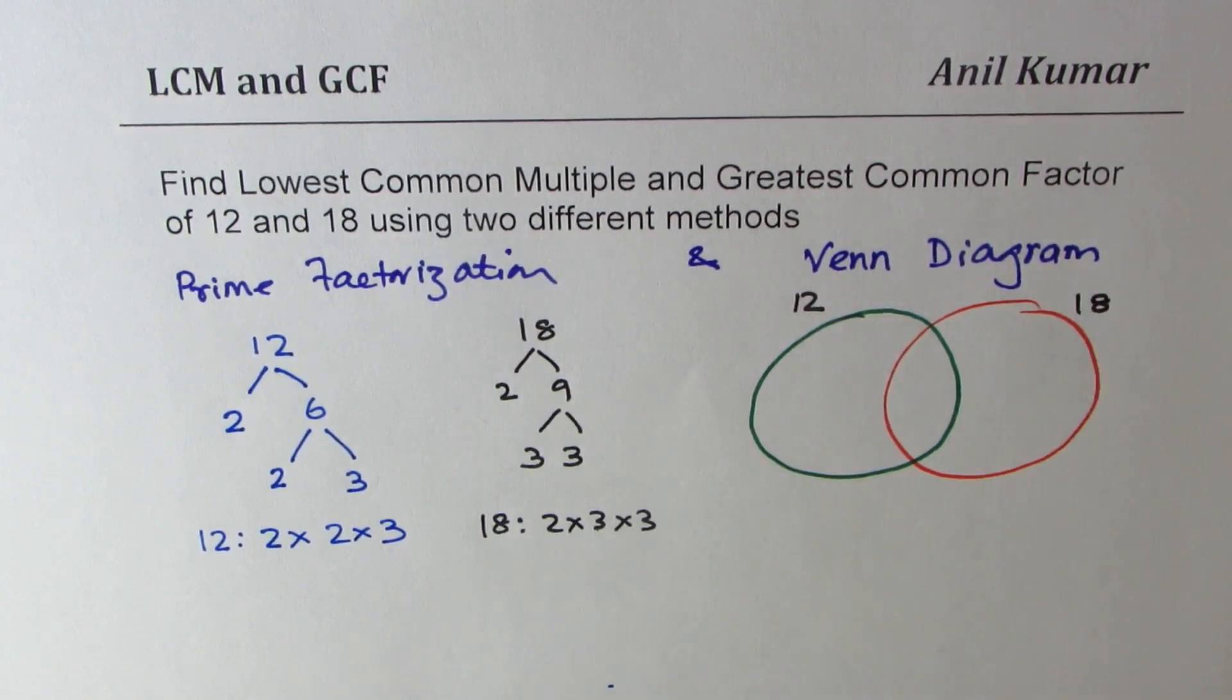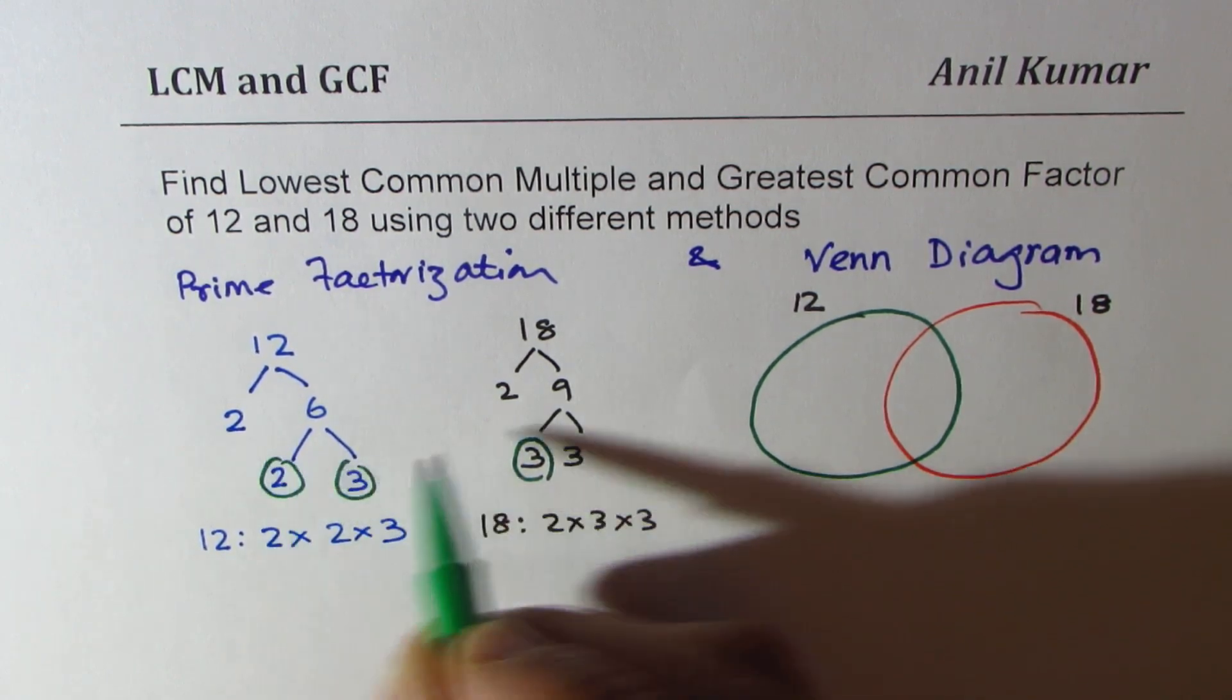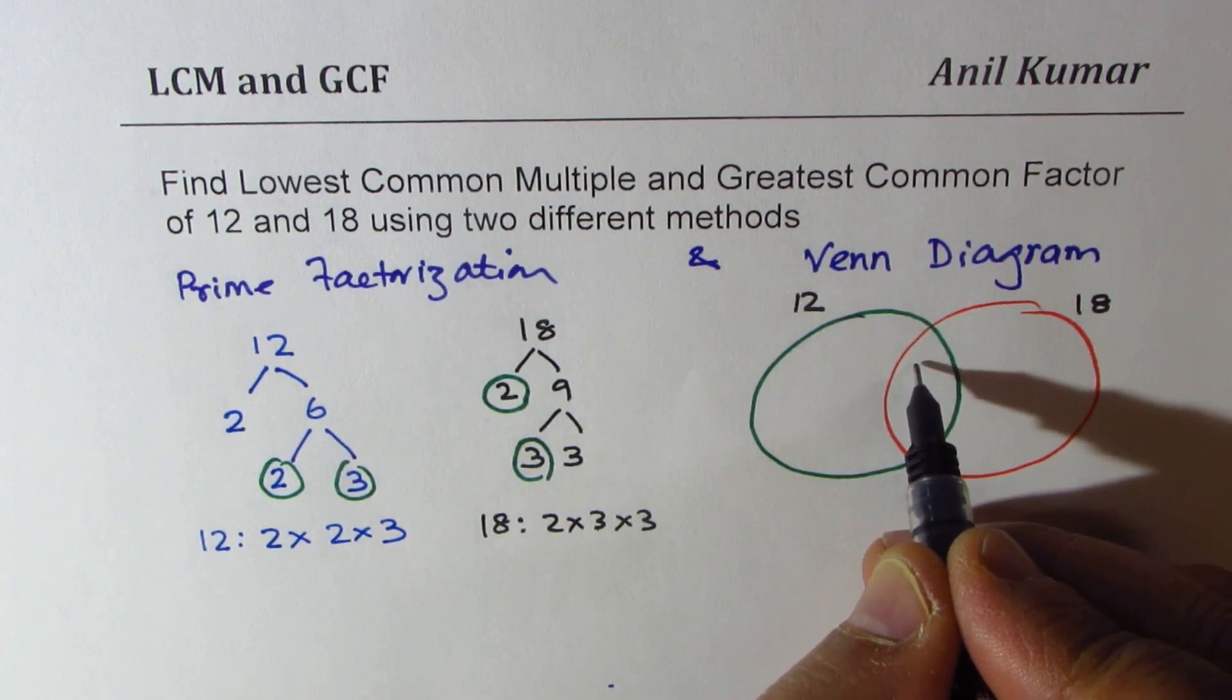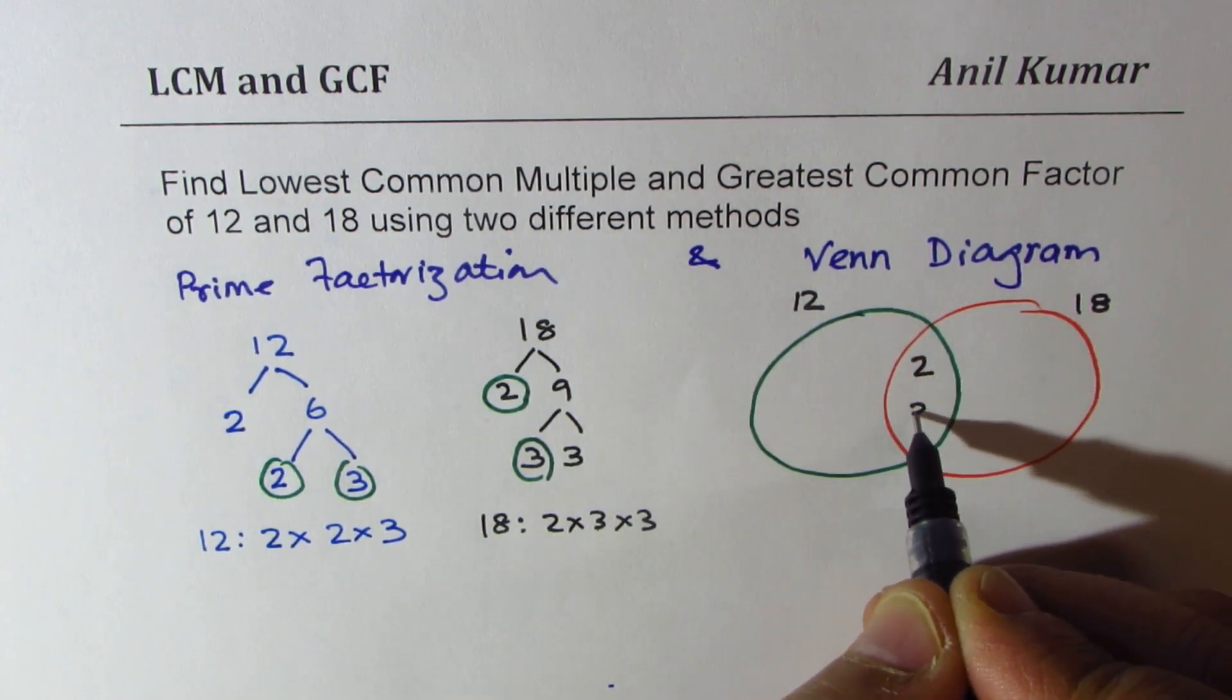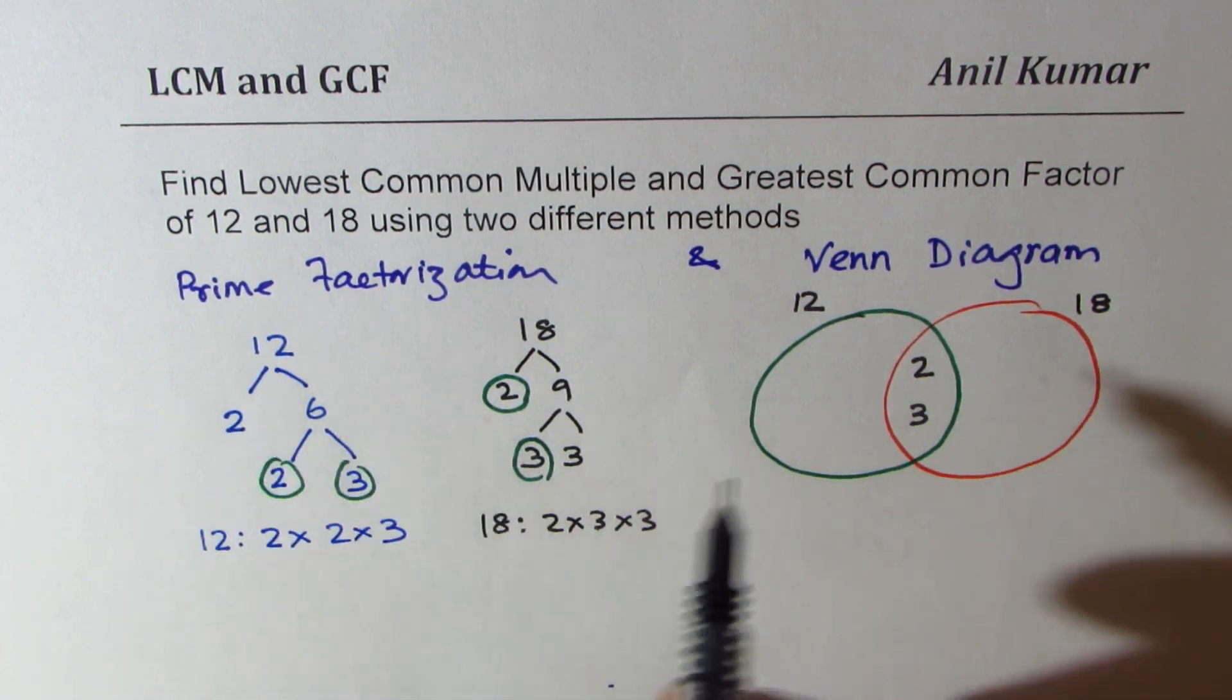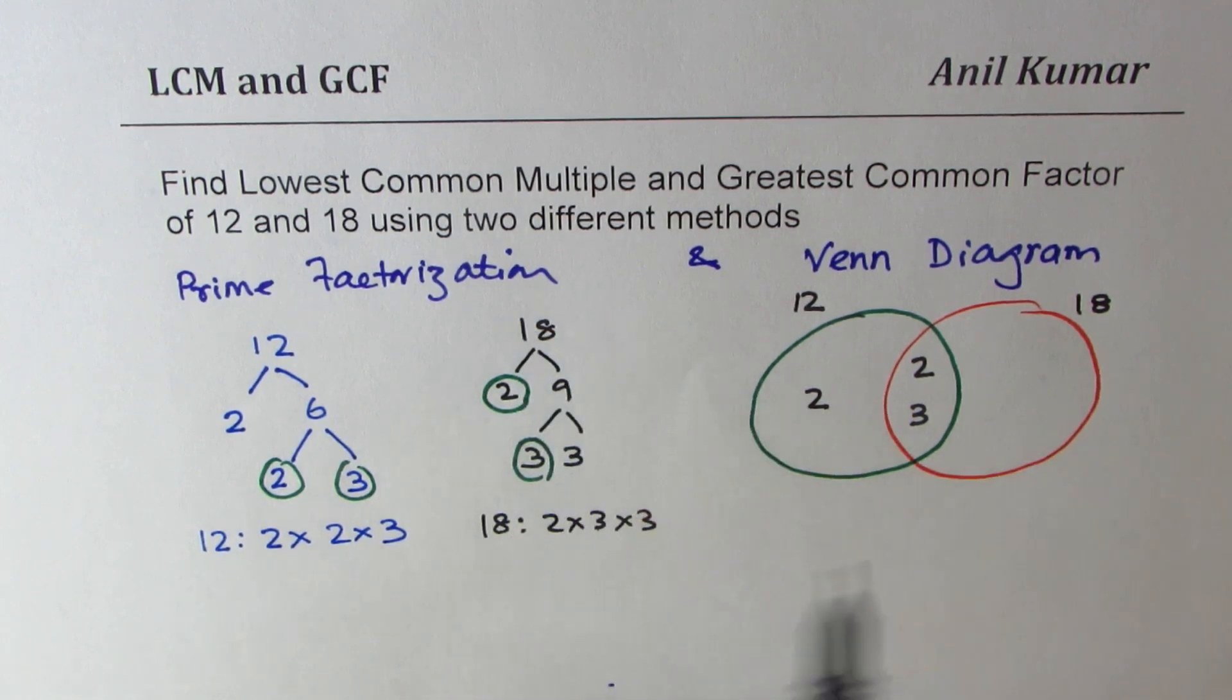Which are common? One 3 is common, and even one 2 is common. Those common factors come right there in the center: 2 and 3. Once you put these numbers, whatever is left for 12, just one 2, is placed here. And for 18 we are left with one 3.